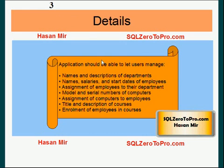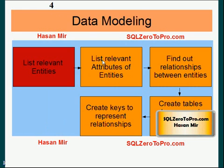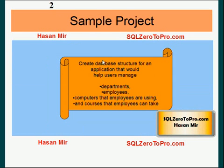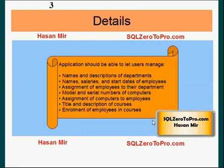In the initial version of the project, you were only told that the application is supposed to manage departments, employees, computers, and courses. But you need more details — what aspects of the department should this application manage? A department has tons of attributes, but you need to know what aspects of departments we are managing, what aspects of employees we are managing, et cetera. This is the more detailed information that you got.